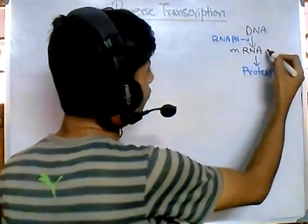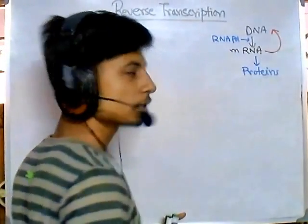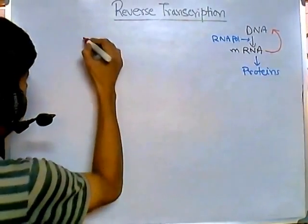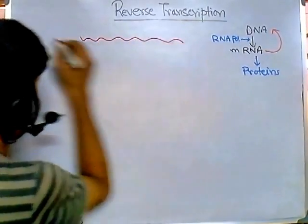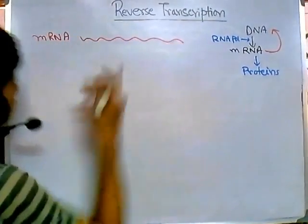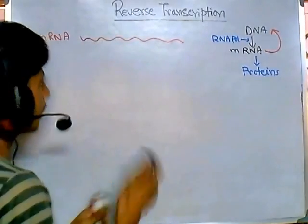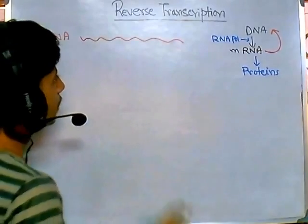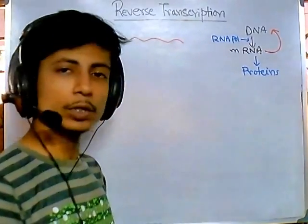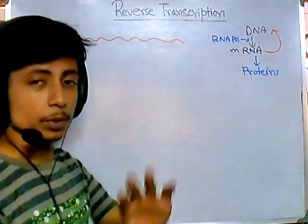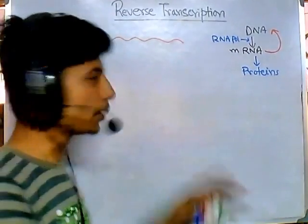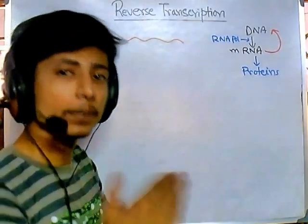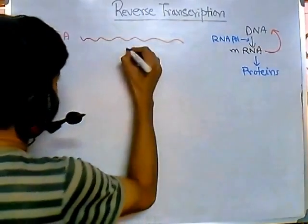In reverse transcription, the name says it all — the transcription process is reversed. That means we start from mRNA and produce DNA. The mRNA is single-stranded, and we use a new type of enzyme to polymerize deoxynucleotides along the single-stranded mRNA to produce a DNA-RNA hybrid.